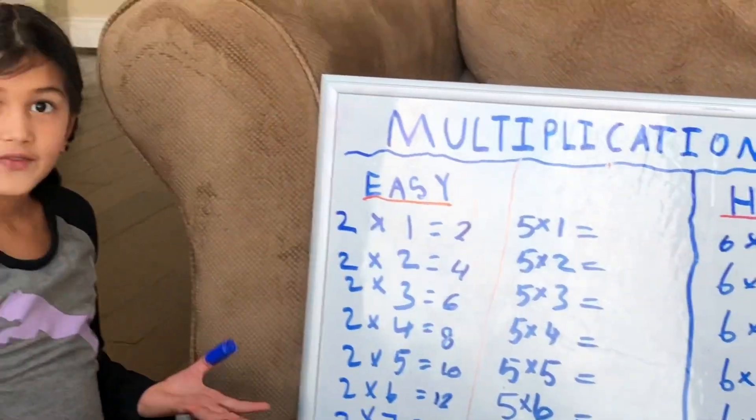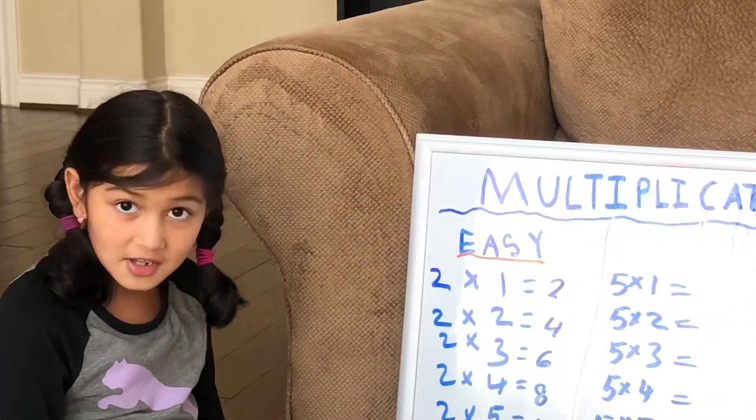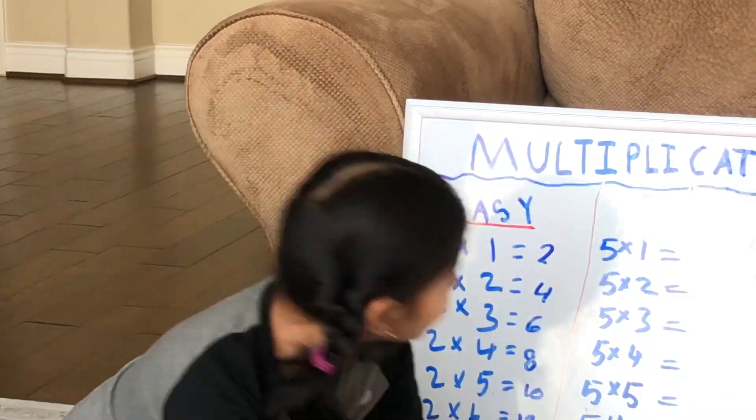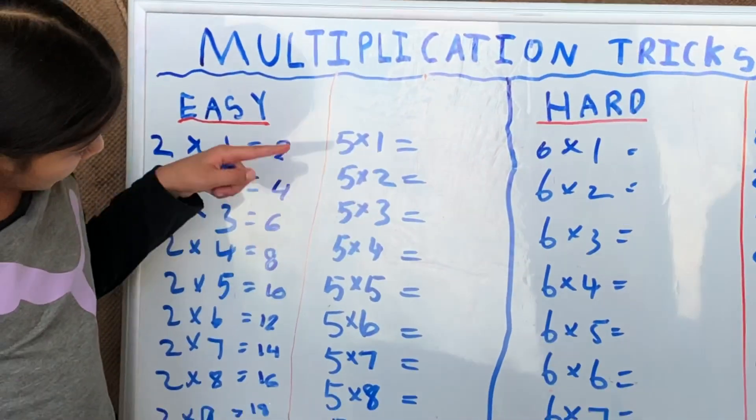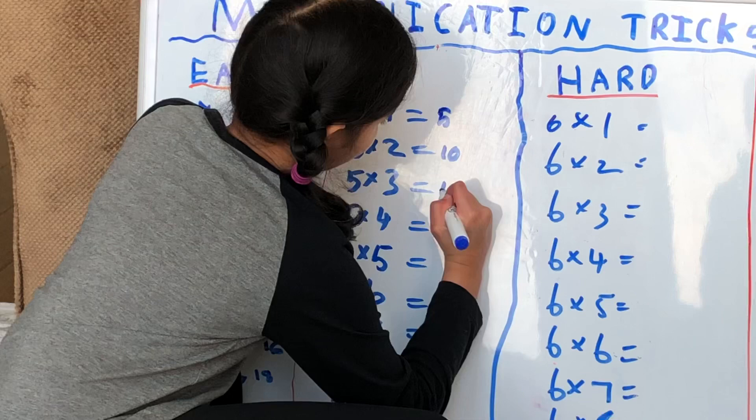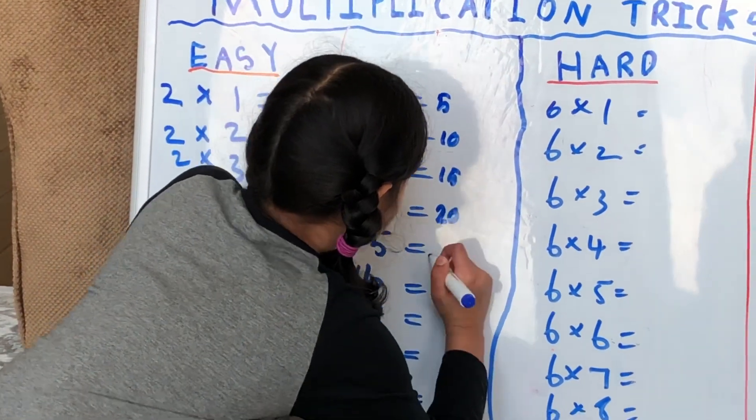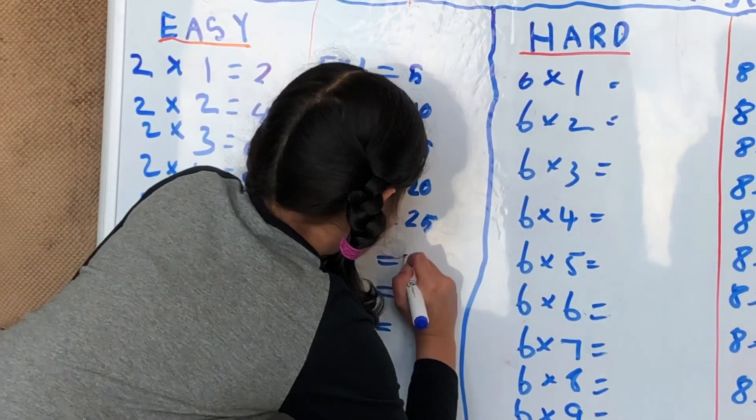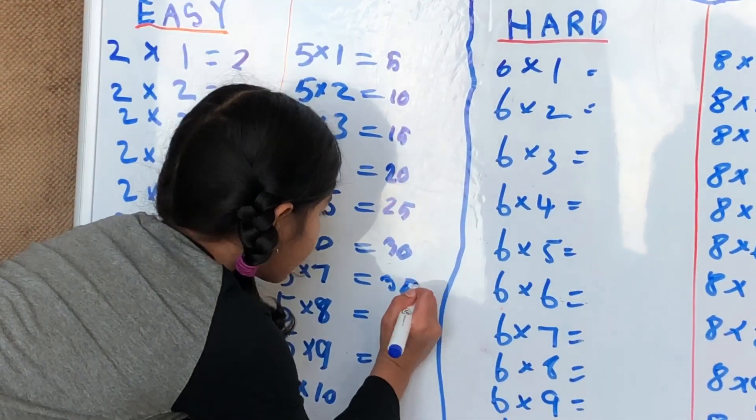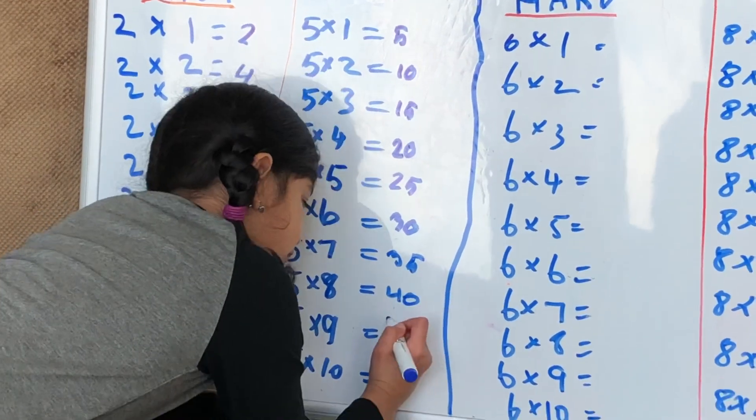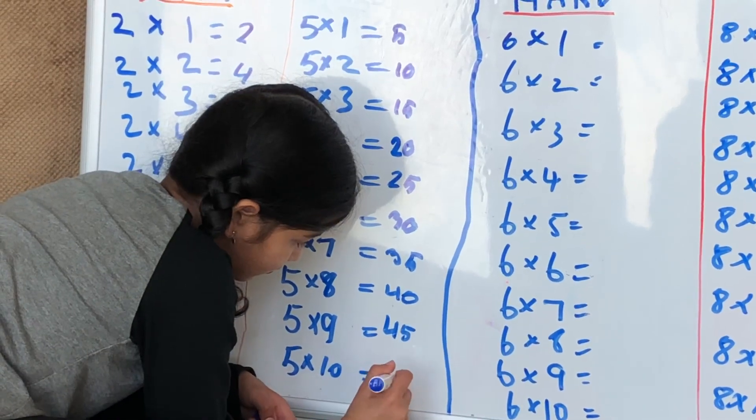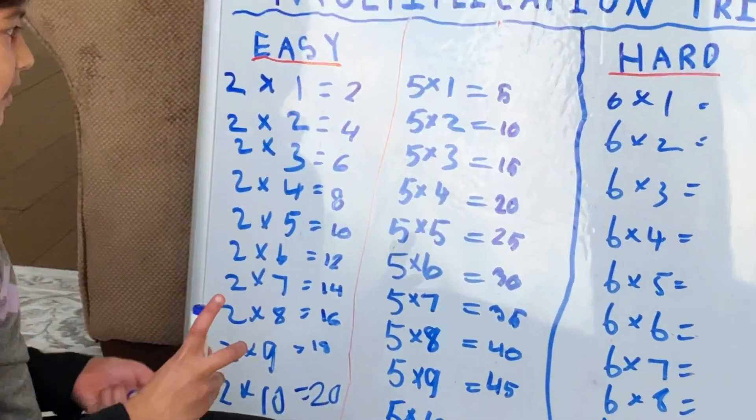Let's move on to 5, which is another easy one, really easy. If you know how to count by 5, then you know how to do this: 5, 10, 15, 20, 25, 30, 35, 40, 45, 50. Now you've finished the 5s.